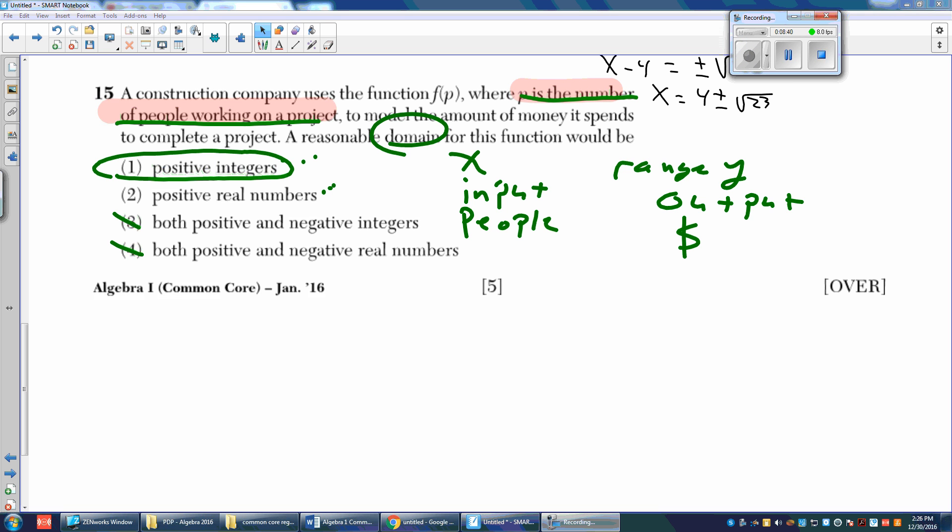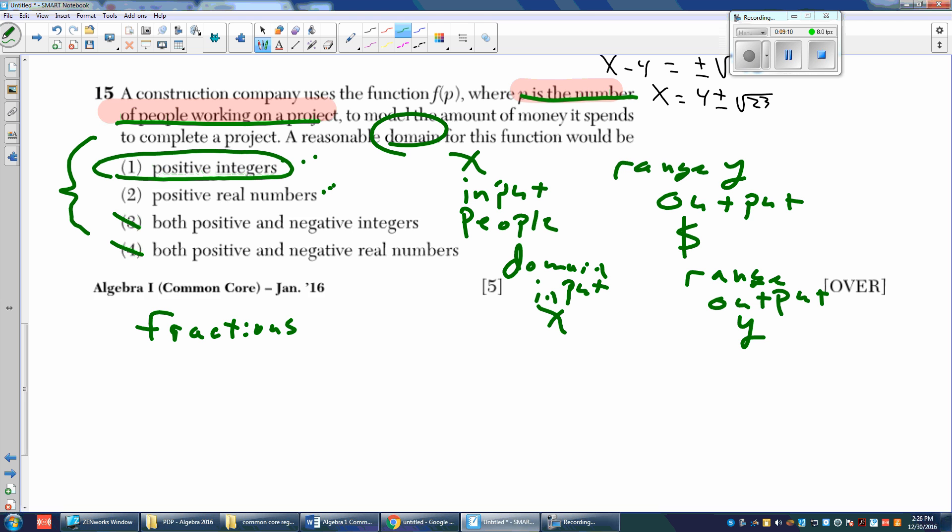Here the key is to know that domain is the input, which is the X value, and range is the output, which is the Y value. And to answer these questions, you have to know what the set of numbers are. Are they fractions? So the ones that are fractions are going to be actually real numbers, or negatives, which are the integers. Fractions are also rationals. If you have any questions, make sure you ask me in class.